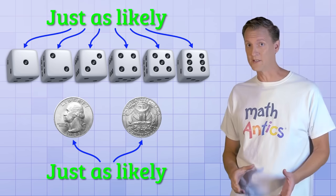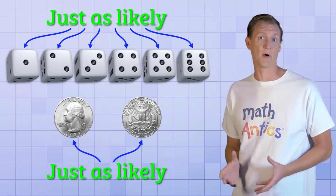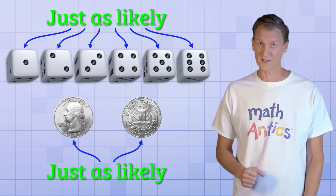But remember, with a coin toss, there are only 2 possibilities, heads or tails. With dice, there are 6 possibilities, and that's going to make a difference in its probability.